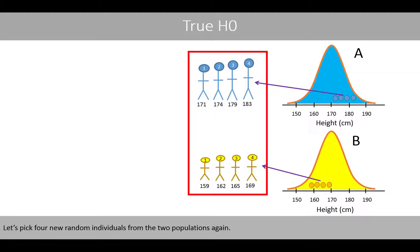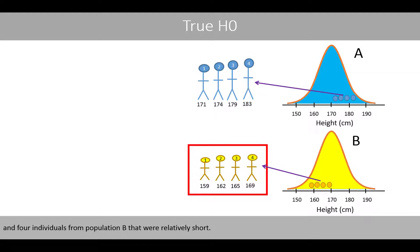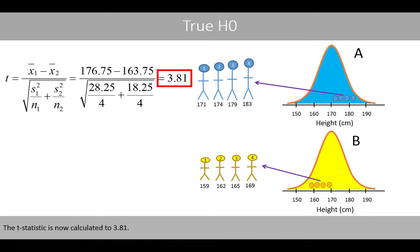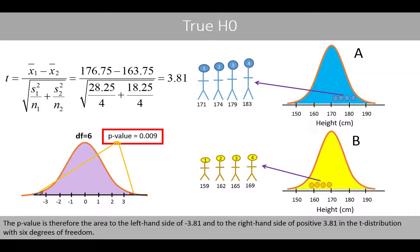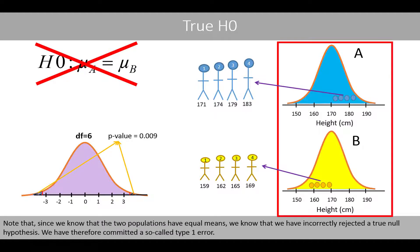Let's pick four new random individuals from the two populations again. However, this time we happen to pick four individuals from population A that were relatively tall, and four individuals from population B that were relatively short. The t-statistic is now calculated to 3.81. The p-value is therefore the area to the left-hand side of negative 3.81 and to the right-hand side of positive 3.81 in the t-distribution with 6 degrees of freedom. Since the p-value in this case happened to be less than 0.05, we will reject the null hypothesis. Note that, since we know that the two populations have equal means, we know that we have incorrectly rejected a true null hypothesis. We have therefore committed a so-called type 1 error.